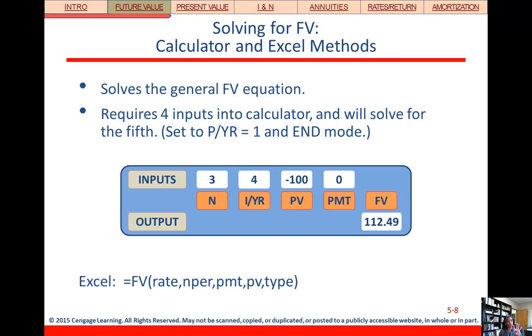So if I put in those four numbers for n, the interest rate, the present value, and the payment, then I can hit compute, future value, and it should give me that result.